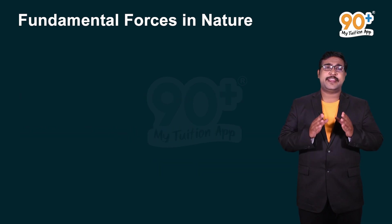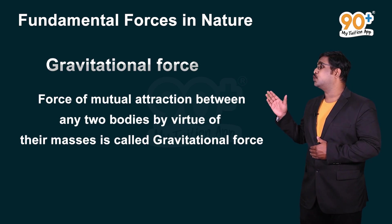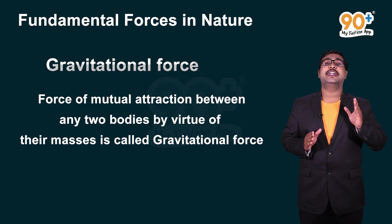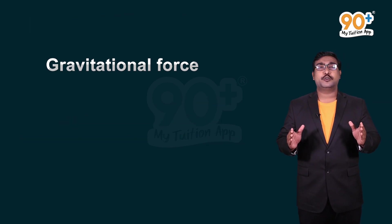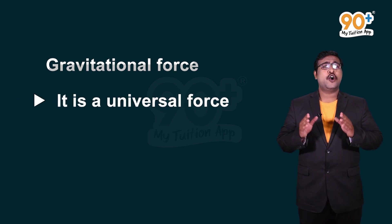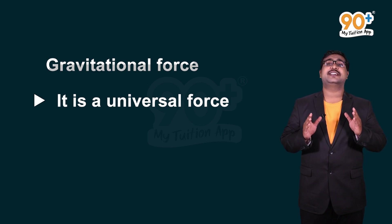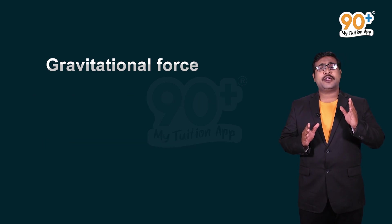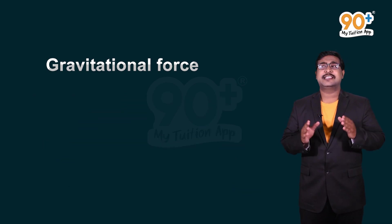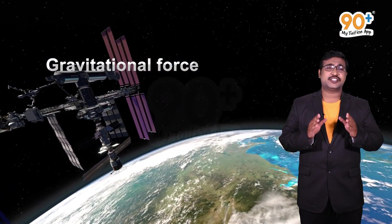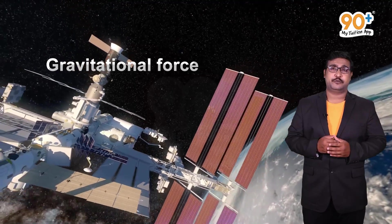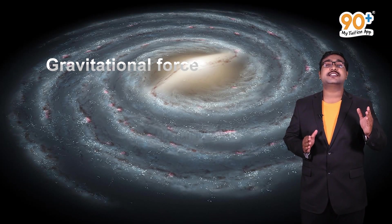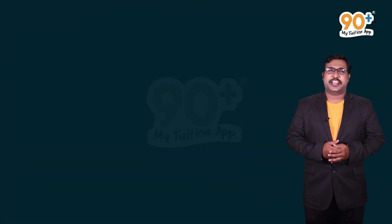Gravitational force is the force of mutual attraction between two bodies by virtue of their mass. It is a universal force, which means all objects in the universe possess gravitational force. It is a long-range force. Whenever we throw an object up it falls down, satellites revolve around our planet — all of this is possible because of gravitational force. It also plays a major role in the birth of stars and galaxies.